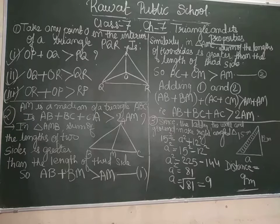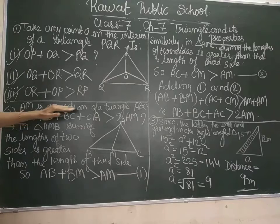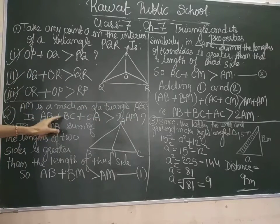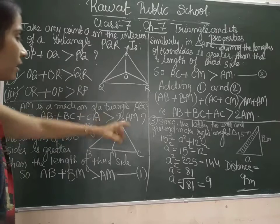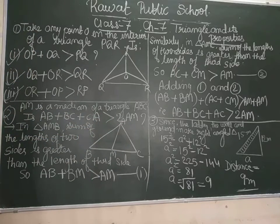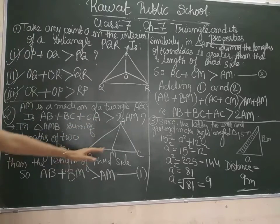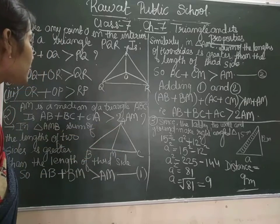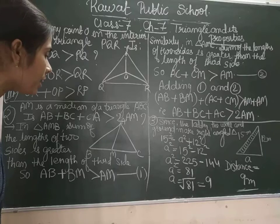Now, we are given another question. AM is the median of the triangle ABC. Is AB plus BC plus CA greater than 2AM? So let's see, we have made a triangle ABC, we have made AM median also. As you all know, what do you mean by median?